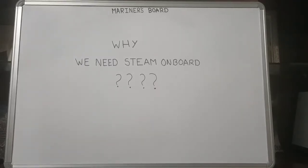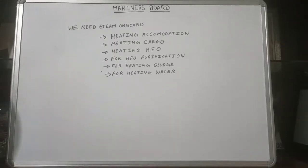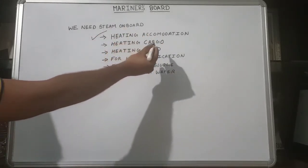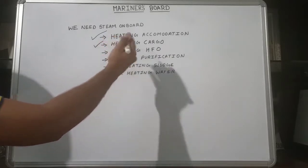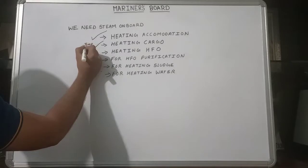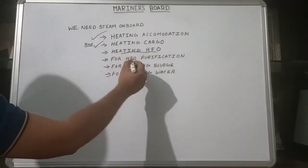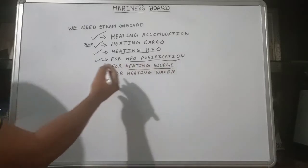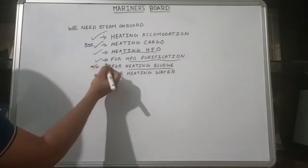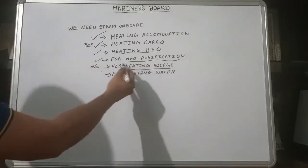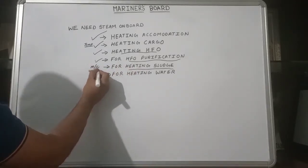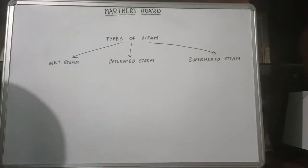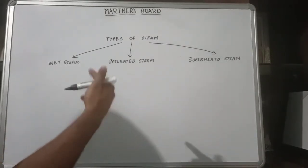There are many uses of steam on board. First, in winters you have to heat the accommodation. Second, for heating cargo, as some cargo requires a specific temperature to be maintained. Third, for heating heavy fuel oil for purification. Fourth, for heating sludge — sludge is the waste from machineries on board and must be heated before incineration. And finally, for heating water.